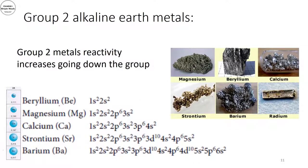We previously talked about the physical properties of group 2 alkaline earth metals, and we saw that the atomic radius increases down the group. The two valence electrons in the s orbital become further from the positive nucleus going down the group. This is why the attraction decreases, making it easier for group 2 elements to lose their two valence electrons — meaning reactivity increases going down the group.